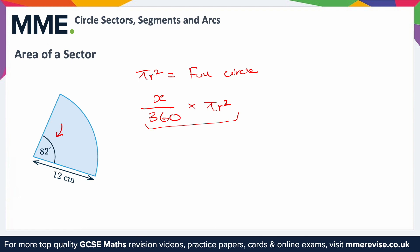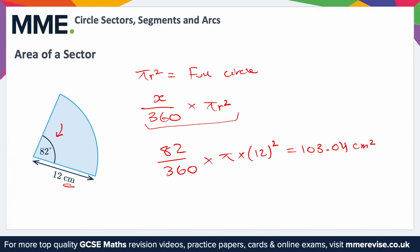For this sector specifically, it's 82 degrees and has a radius of 12 centimeters. Substituting those in: 82 over 360, times π, times 12 squared. Put this into your calculator and it gives you 103.04. Since it's an area and the radius was in centimeters, the answer is 103.04 centimeters squared.